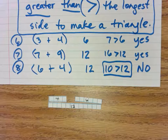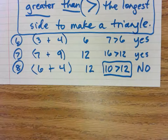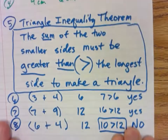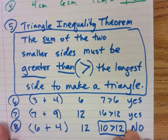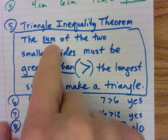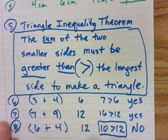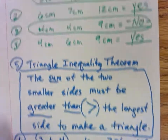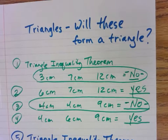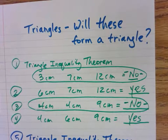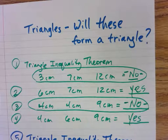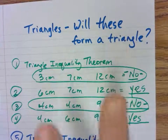Hopefully this isn't driving you crazy and you know how to work this out. Again, this is called the Triangle Inequality Theorem: the sum of the two smaller sides must be greater than the longest side to form a triangle. Today I hope you've learned how to determine whether given lengths will form a triangle or not. If you have any questions, let me know — ciao for now!